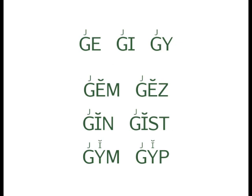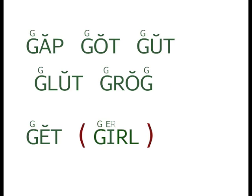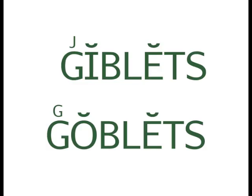G will have a 'juh' sound before E, I, and Y. And, like C, it will have its hard 'guh' sound before A, O, U, and any consonant. However, unlike C, there are some exceptions for G. In a few words it will have its 'guh' sound before E, I, or Y, and some of these are fairly common words, like 'get' and 'girl.'